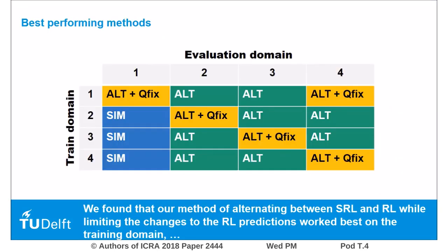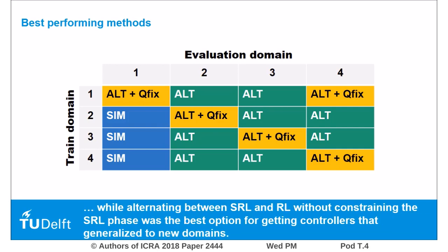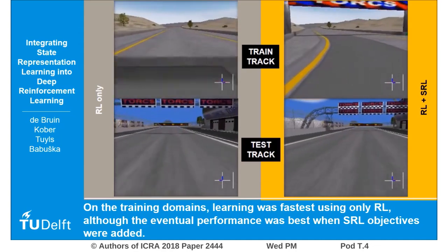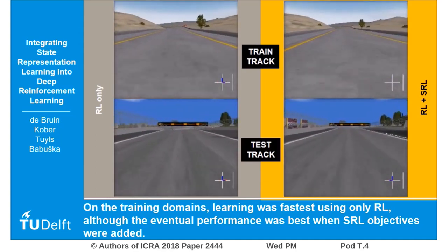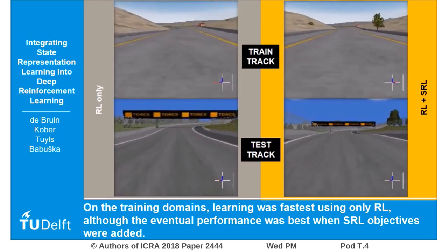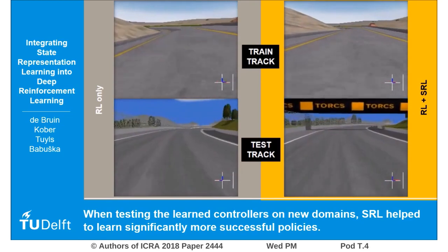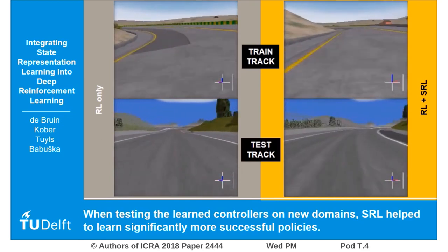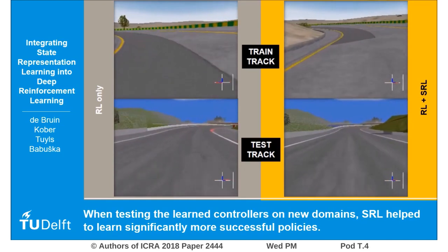We found that our method of alternating between state representation learning and reinforcement learning while limiting the changes to the reinforcement learning predictions during the state representation learning phase works best on the training domain. While alternating without constraining the state representation learning phase was the best option for getting controllers that generalized to new domains. On the training domains, learning was fastest using only reinforcement learning, although the eventual performance was best when state representation learning objectives were added. When testing the learned controllers on new domains, state representation learning helped to learn significantly more successful policies.